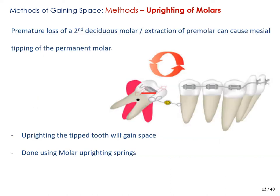The next technique is uprighting of molars. As seen in the image, if a molar was mesially tipped and you are able to upright it, you automatically gain enough space to retract the remaining teeth, fit a prosthesis, or place an implant. This situation arises from premature loss of a second deciduous molar or extraction of a premolar, resulting in the mesial tipping seen in the image. Uprighting of these teeth helps gain space and is done using molar uprighting springs.